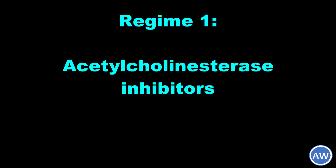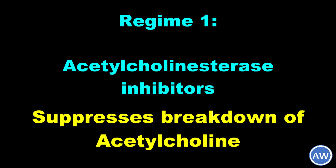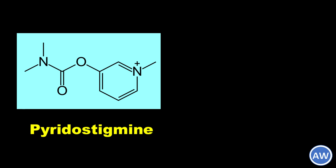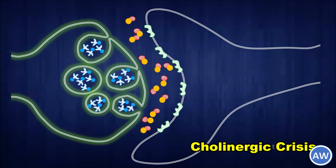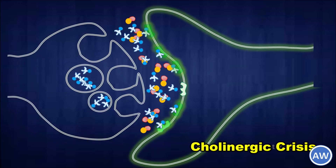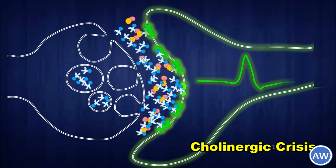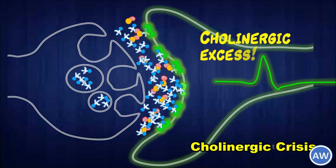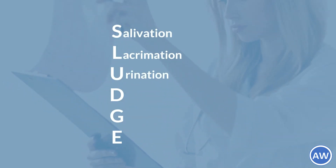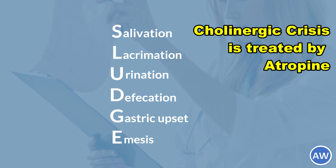The treatment of myasthenia gravis is fourfold. The first is symptomatic treatment using acetylcholinesterase inhibitors, which suppress the breakdown of acetylcholine. The most common is pyridostigmine; if not available, neostigmine can also be used. Excessive administration of the drug may lead to cholinergic crisis — an overstimulation at the neuromuscular junction due to excessive acetylcholine resulting from inactivity of the acetylcholinesterase enzyme. This is also called SLUDGE syndrome: a combination of salivation, lacrimation, urination, defecation, gastrointestinal distress, and emesis. Cholinergic crisis is treated by administration of atropine.